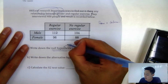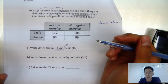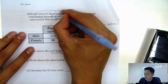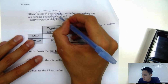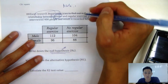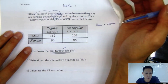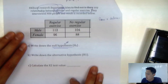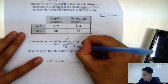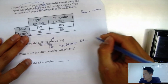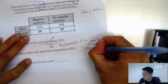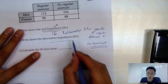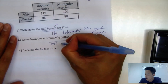For the null hypothesis, we always assume the two variables are independent — meaning one won't affect the other. So the null hypothesis is: the relationship between gender and regular exercise is independent. The alternative hypothesis is the opposite: they are not independent events.